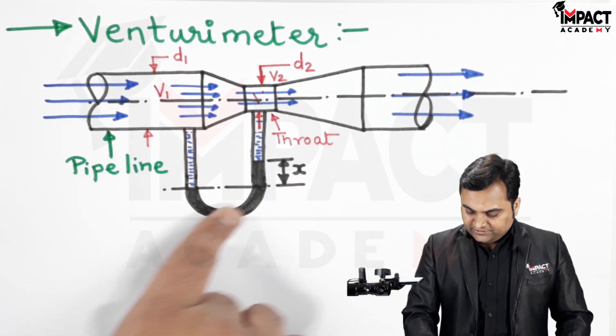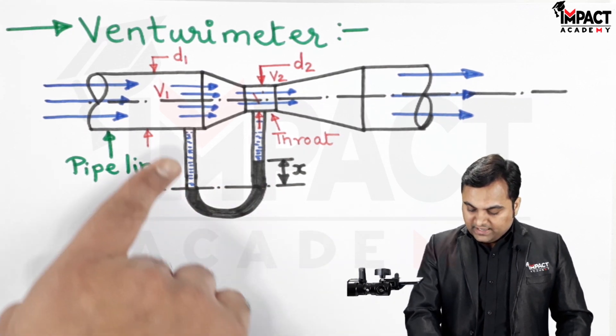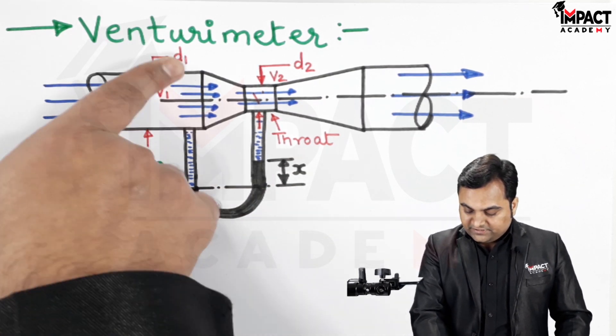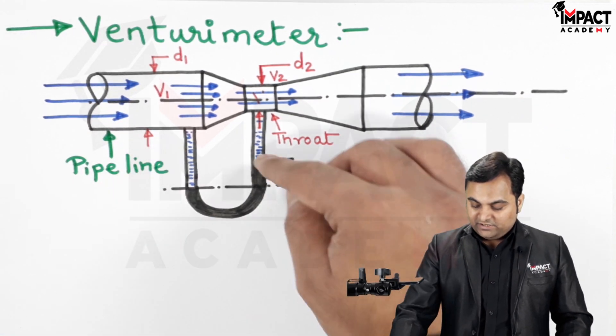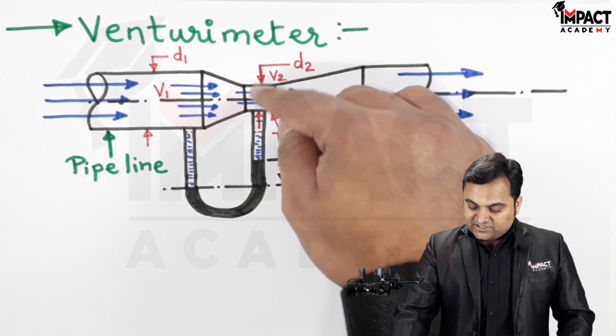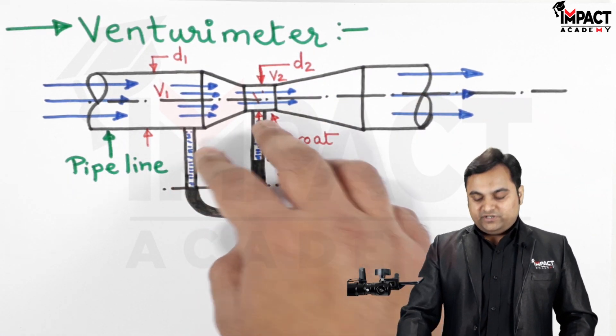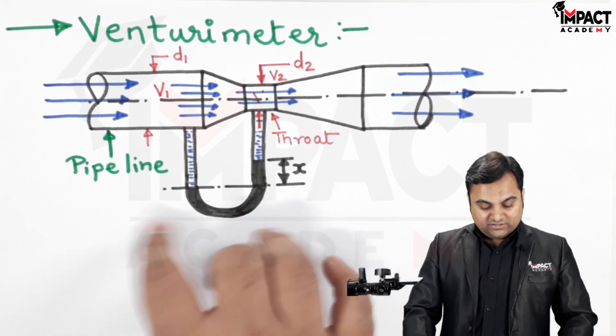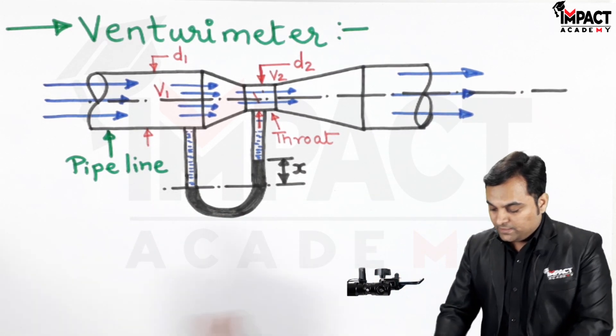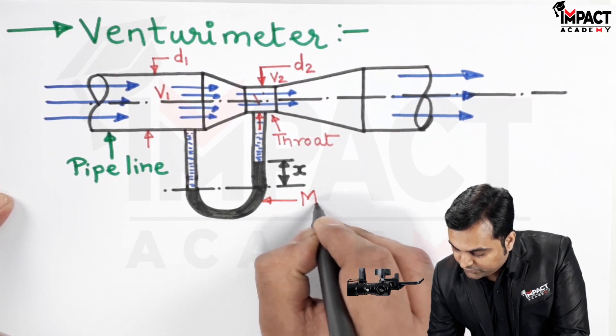As we can see it is connected to a differential U-tube manometer. One of the section is connected at diameter D1, the left limb is connected, the right limb is connected at section 2 or we can say diameter D2. The difference in pressure is indicated by this height which is called as X, and here there is a mercury manometer so this indicates the level of mercury, it contains mercury.